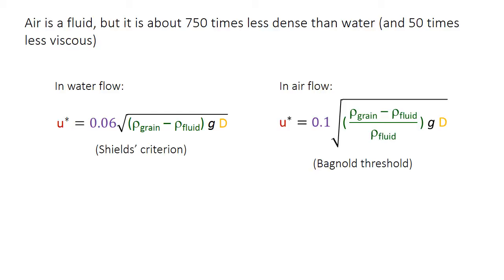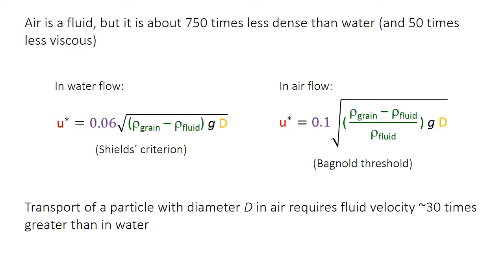The density of fresh water is one gram per cubic centimeter, so the equation only includes grain density minus fluid density. But because the fluid density of air is around 750 times less than that of water, movement of a particle of diameter d requires an airspeed around 30 times greater than the water velocity that would be required to move the same particle.